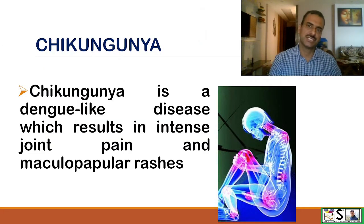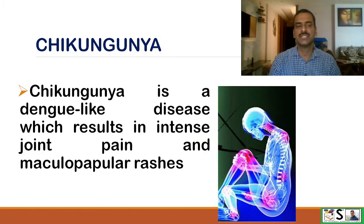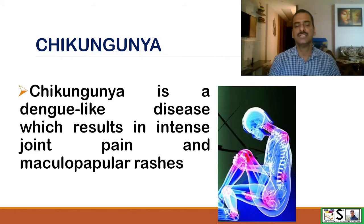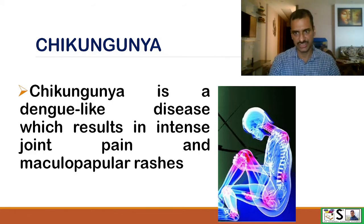What is Chikungunya? Chikungunya is a dengue-like disease which results in intense joint pain and maculopapular rashes.